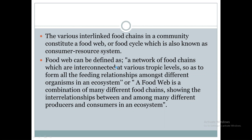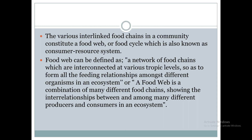The food web is defined as a network of food chains which are interconnected at various trophic levels. It is a network of food chains that are interlinked with each other at various trophic levels, forming all the feeding relationships between various organisms. It is a combination of many different food chains showing the interrelationship between and among many different producers and consumers in any ecosystem.